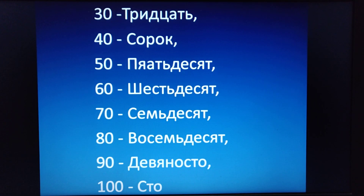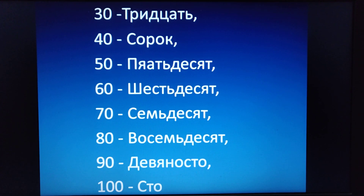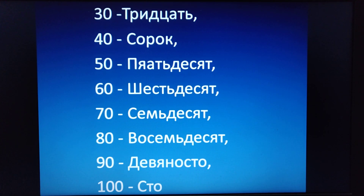Trith-Natsach is thirty. Sorak is forty. Pijishyat is fifty. Shijishyat is sixty. Simjishyat is seventy. Vosem-Natsach is eighty. Jivinosta is ninety. And Sto is hundred. We will repeat: Trith-Natsach. Sorak. Pijishyat. Shijishyat. Shemjishyat. Vosemjishyat. And Jivinosta. I sto.